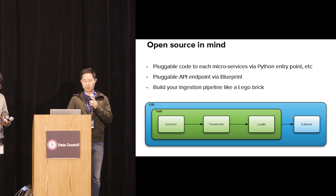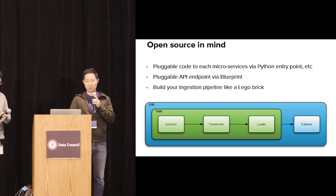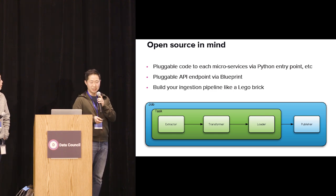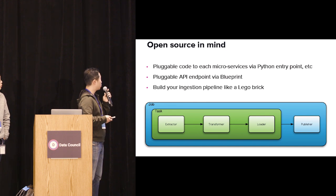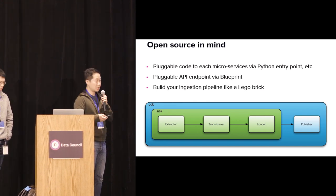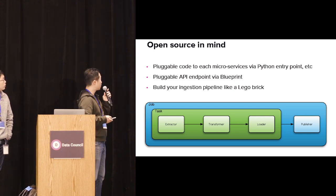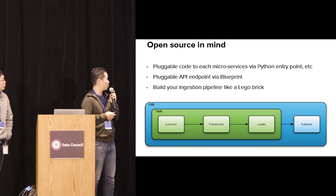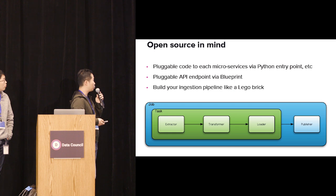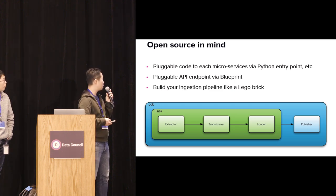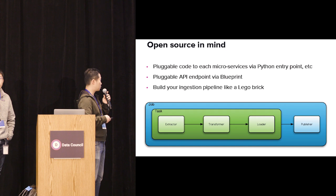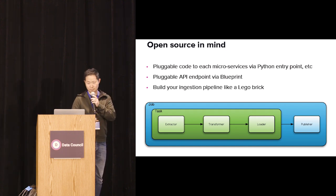The next part is a brief introduction to the architecture. We built this with open source in mind, so if you're interested in collaborating, that would be great. Many parts are pluggable — you can inject your own event emitter, use Python Blueprints to plug in custom API endpoints, and our ingestion engine is like a Lego brick: you can mix and match open source and private transformers.